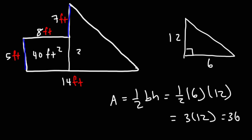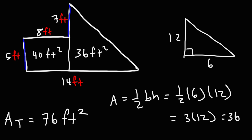This is not drawn to scale, as you can see. The total area is going to be 40 plus 36, so for the composite figure, the total area is 76 square feet.